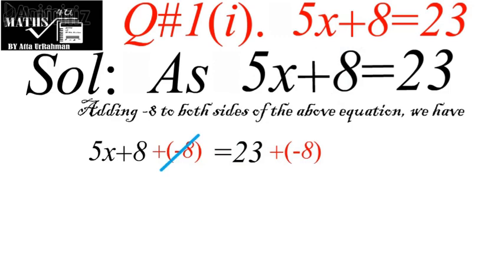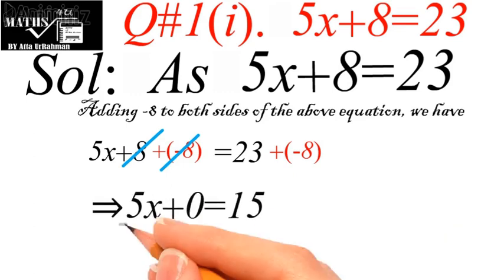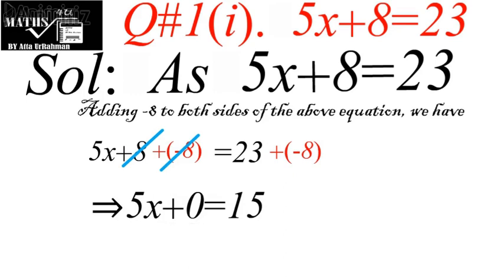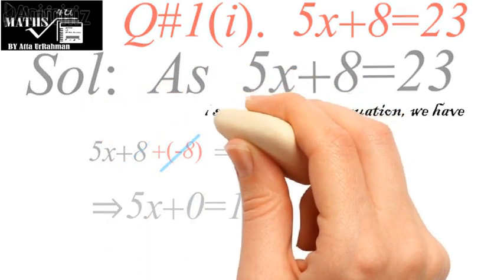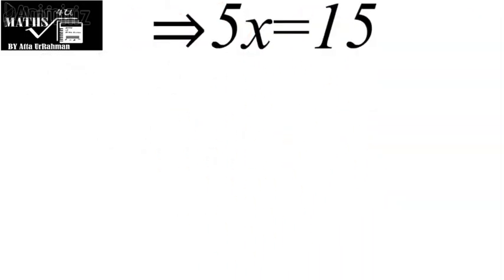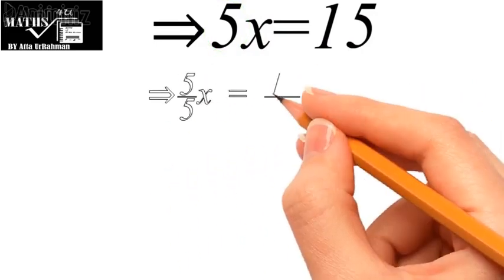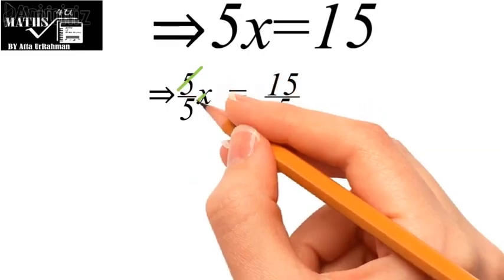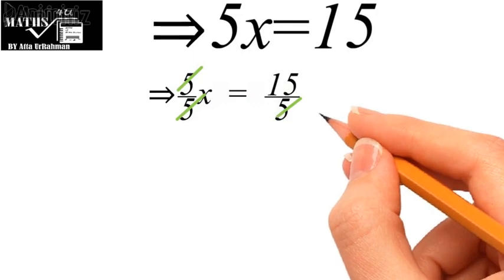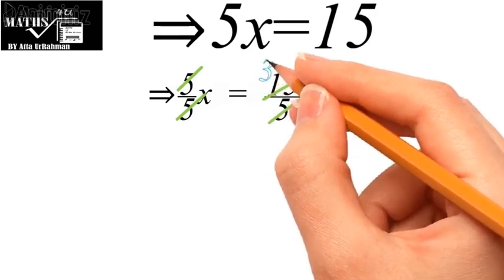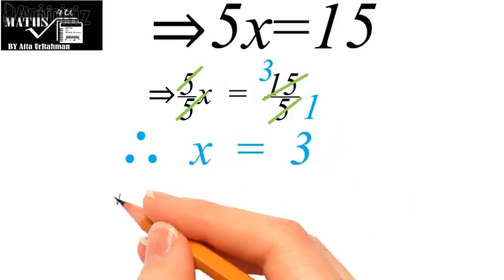In the left hand side we see that 8 and minus 8 will cancel each other as they are the additive inverses of each other. On the right we will add 23 with minus 8, giving 5x plus 0 equal to 15. By the additive identity, we are left with 5x equal to 15. Now we want to isolate x, so we divide this whole equation by the coefficient of x, that is by 5. On the left 5 cancels with 5, and on the right 15 divided by 5 gives 3. So x is equal to 3.